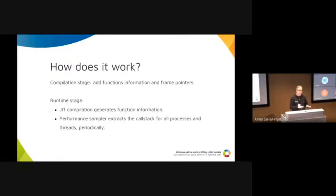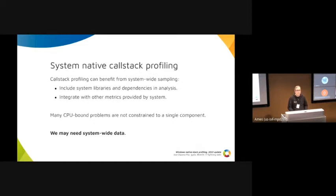How does it work? First, at the compilation stage, we need to generate the function information and frame pointers. Then at the runtime stage, the JIT compilation will also generate frame information, and the performance sampler will extract the call stack for all processes and threads periodically. Call stack profiling can benefit from system-wide sampling, so we want to include the system libraries and dependencies in the analysis.